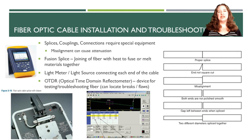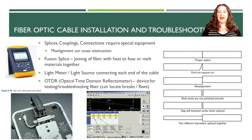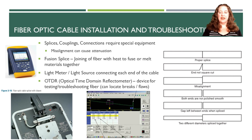Different reasons fiber optic may not work well include improper splicing. A proper splice lines everything up perfectly and straight. A non-square cut won't connect correctly. If two cables are not aligned, you'll have a misalignment. The ends must be polished smooth — rough, jagged edges won't connect properly. Gaps are bad because they let in air and impurities. Finally, if you try to connect single mode to multi-mode, the diameters won't match and nothing will work correctly.